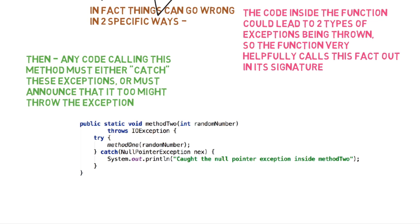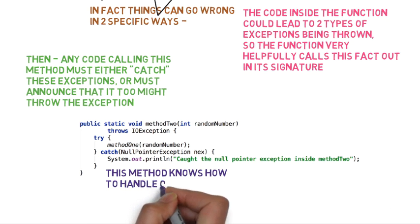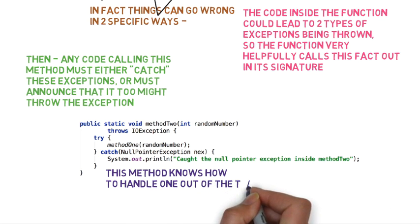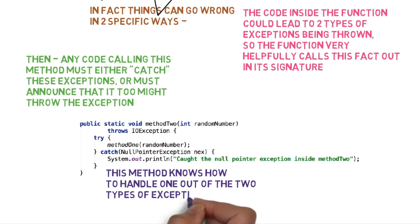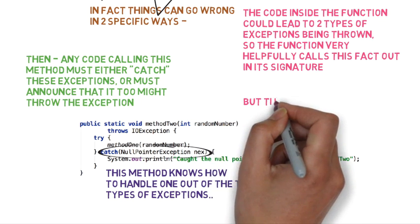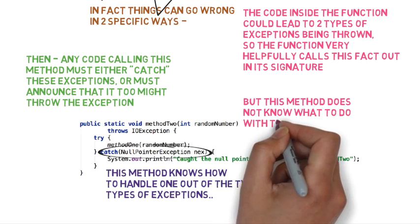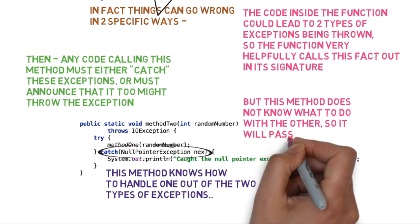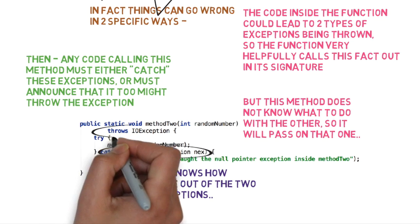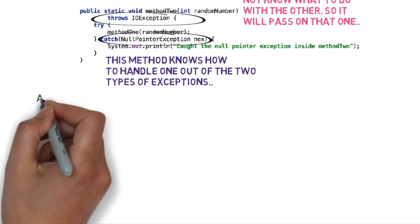Let's say we now have a method two which calls method one. Method two also takes a random number and simply passes it on to method one. This method knows how to handle one out of the two types of exceptions that method one throws — specifically, it knows how to handle the NullPointerException, and it simply prints it out to screen. However, this method does not know what to do with the IOException, so it passes it to its calling code and specifies this in its signature.